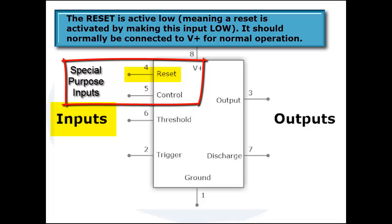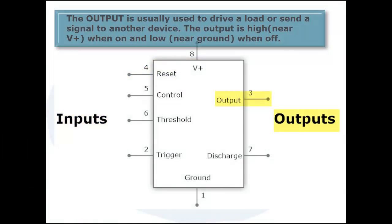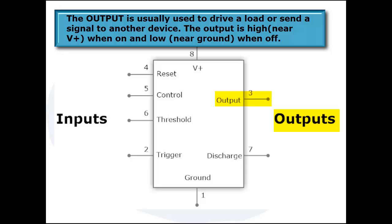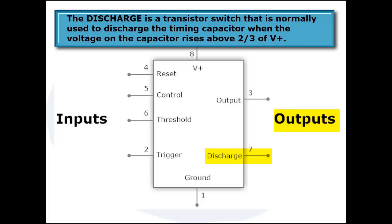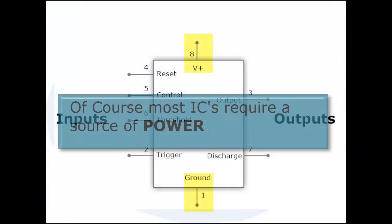If you look at the other side we have the outputs and that includes pin 3 which typically is the pin that provides power to your load or output to your load. And we have the discharge which is really just a switch, a transistor switch in the IC.